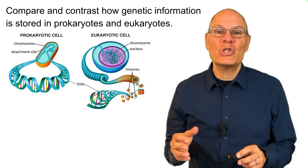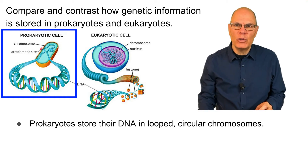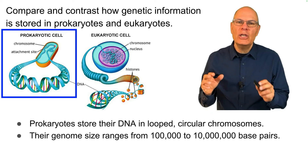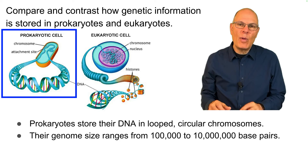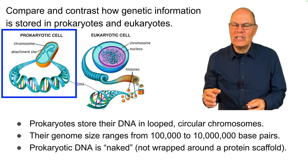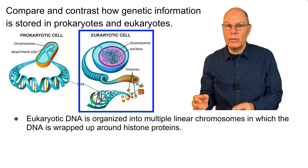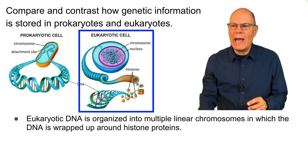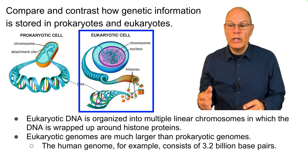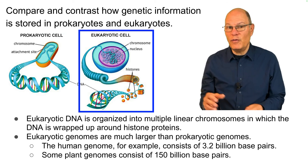Compare and contrast how genetic information is stored in prokaryotes and eukaryotes. Prokaryotes store their DNA in looped circular chromosomes — the beginning and end are connected. The genomes of bacteria and archaea range from about 100,000 to 10 million base pairs, and their DNA is naked — not wrapped around a protein scaffold. In eukaryotes, the DNA is organized into multiple linear chromosomes and is wrapped around proteins called histones. Eukaryotic genomes are much larger; the human genome consists of 3.2 billion base pairs, and some plant genomes consist of 150 billion base pairs.